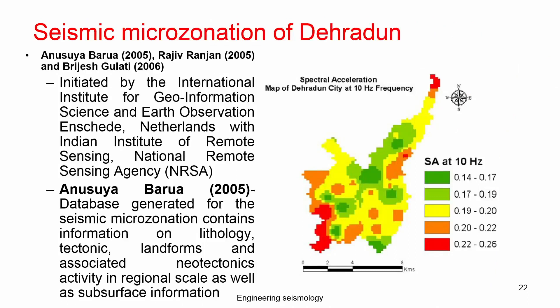Another work was done by Dehradun's Valdiya Institute of Technology, where a number of PhD students worked on different topics. All values were clubbed together to produce microzonation work. Dr. Mahajan, who is now at another institute, was one of the pioneer persons in MASW survey in India. He was the first to carry out seismic surface wave testing in India and published papers based on that classical work.